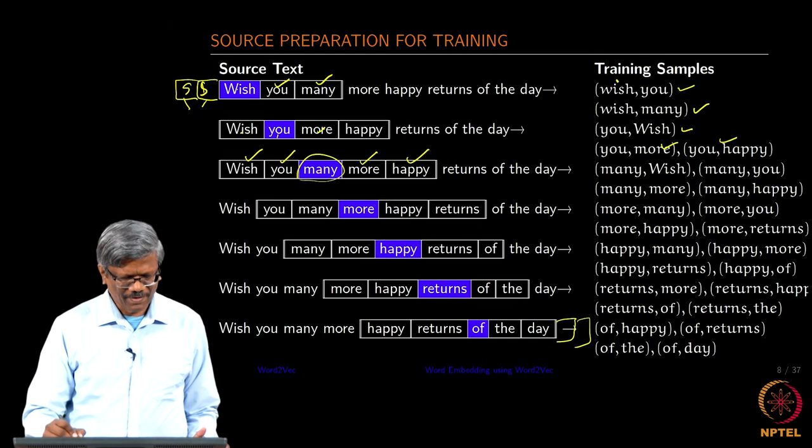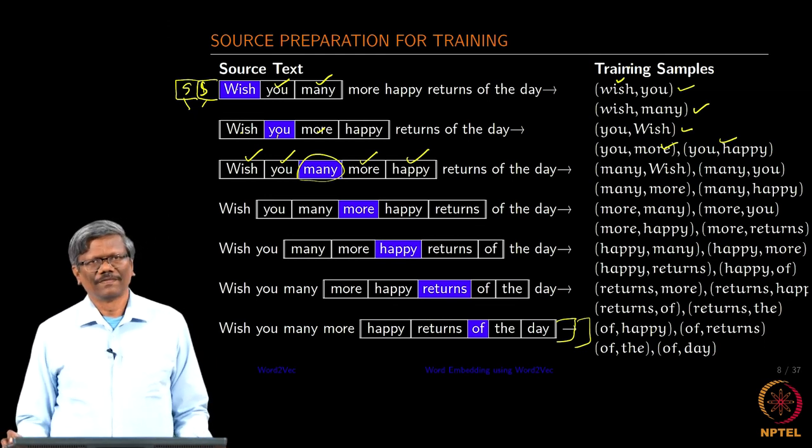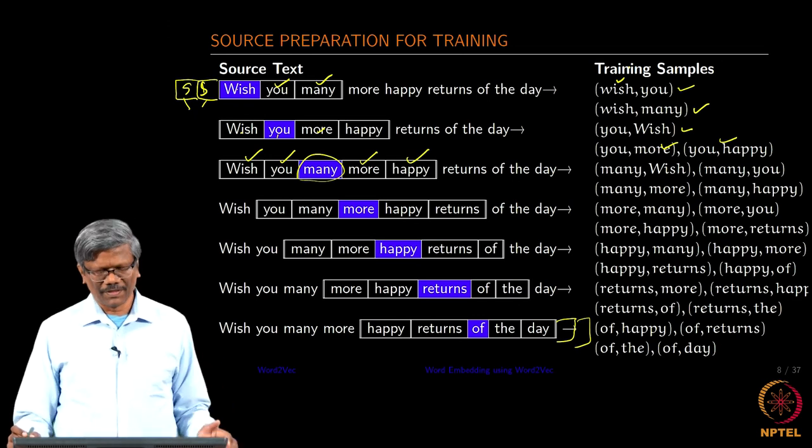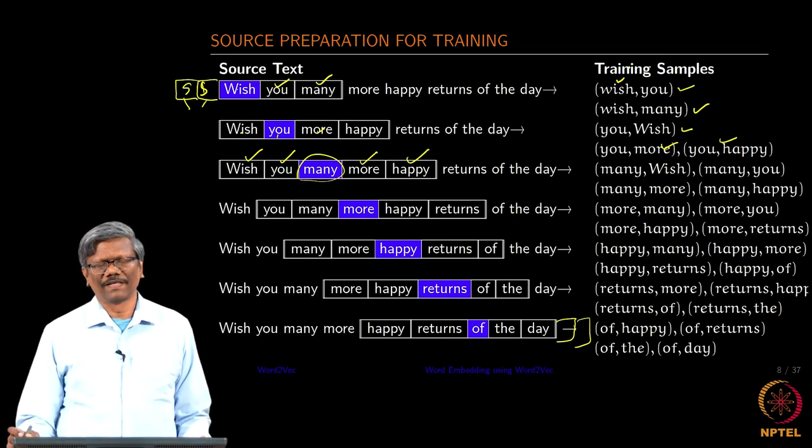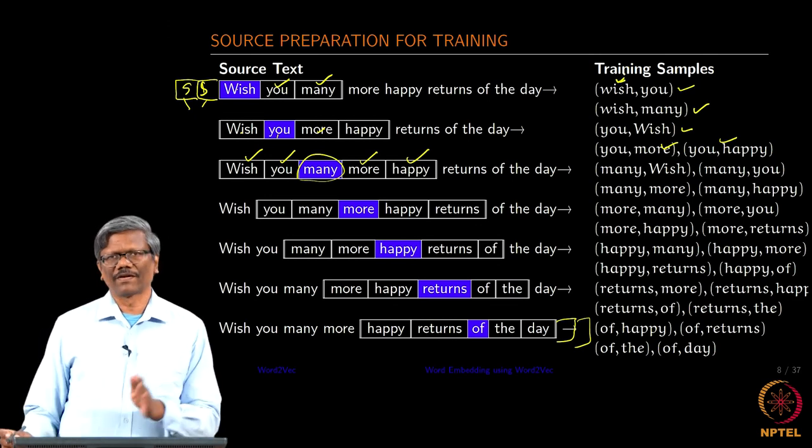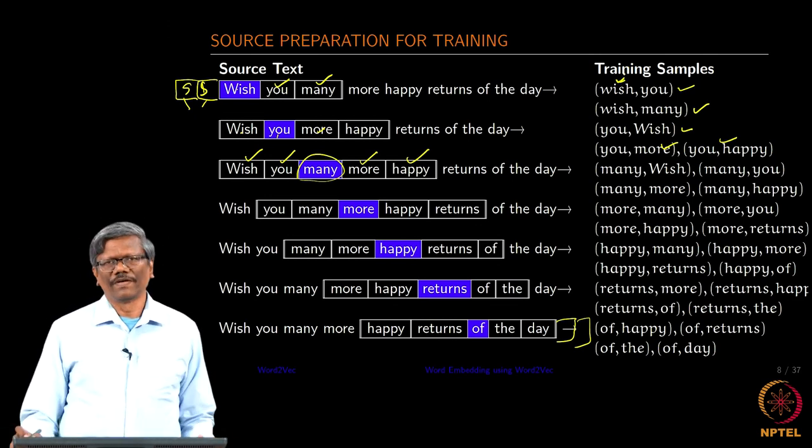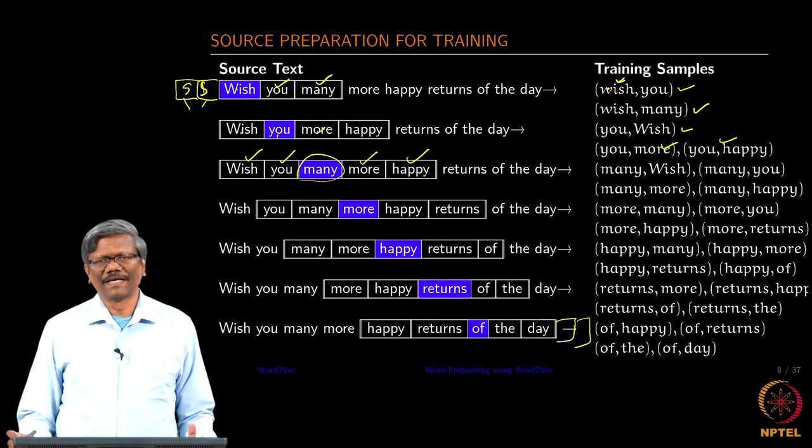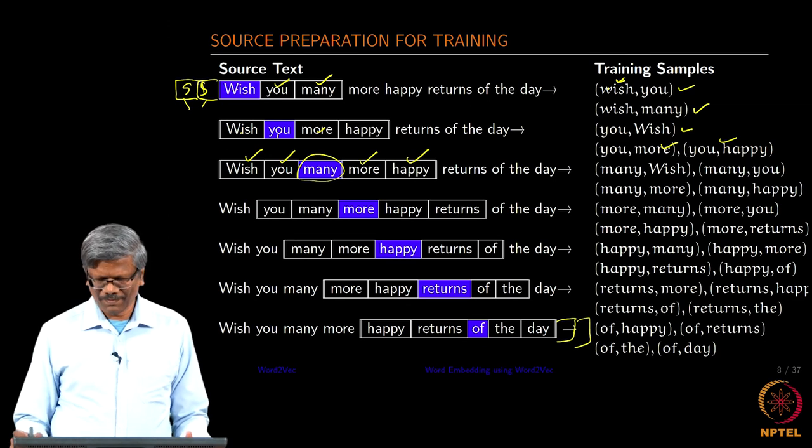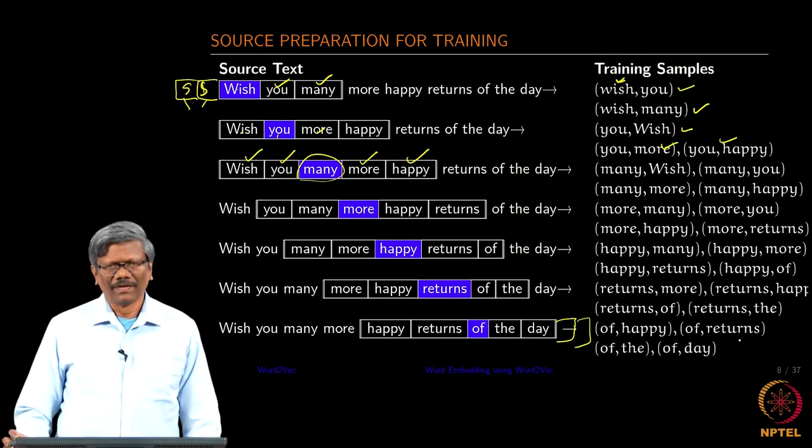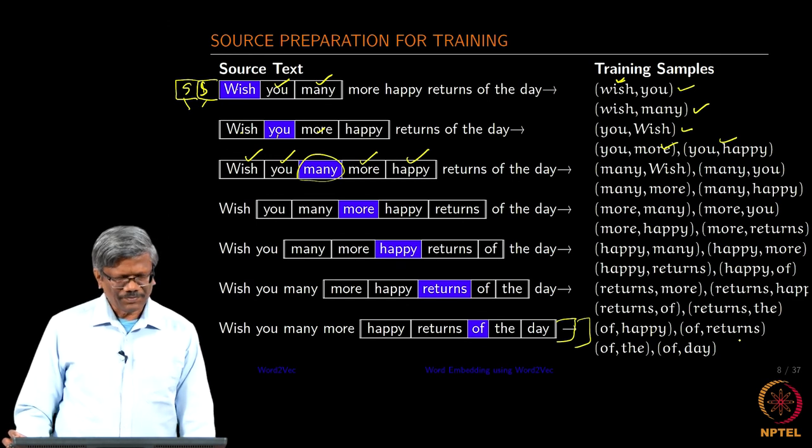First one is always the central word. This is going to be input into the neural network. Let us say if you are looking at the CBOW model, I will use wish, I will take the corresponding one hot vector related to this and then use that as the input for the V network. You understand how this training data is created.